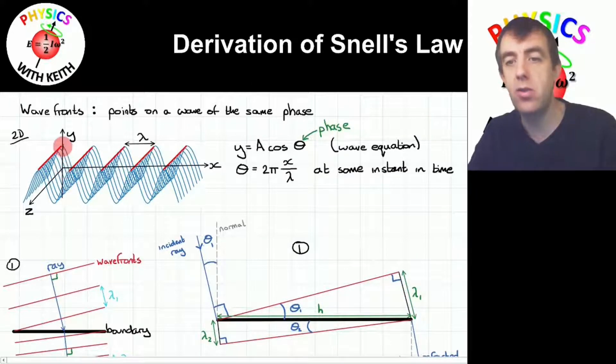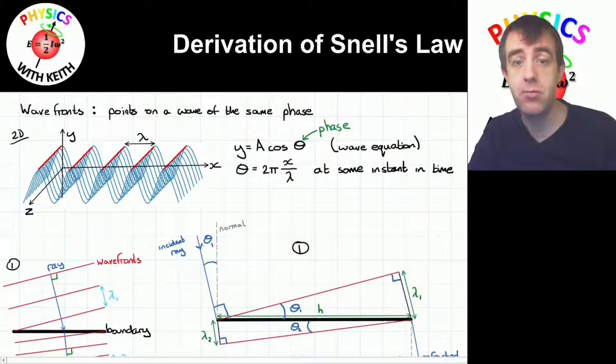You can see that when x equals lambda, so we'll start here where our phase is, let's say, zero, then if we move in the x direction one wavelength, then x divided by lambda will equal one, and the phase difference between this wavefront and this wavefront is two pi, which is equivalent to zero. So that's how phase works, and that's what wavefronts are. So now we can use wavefronts to construct a diagram of refraction.